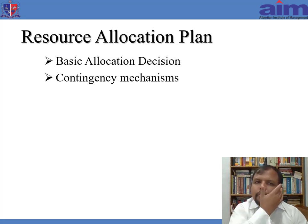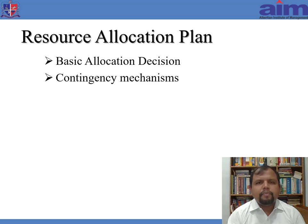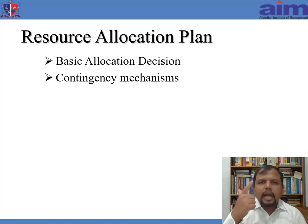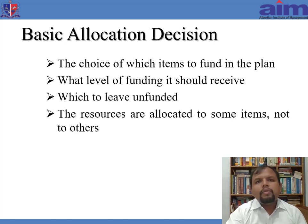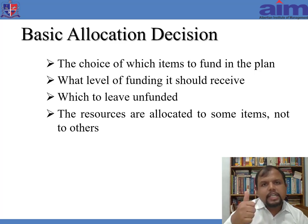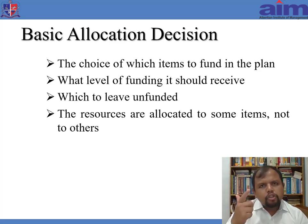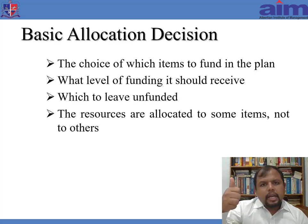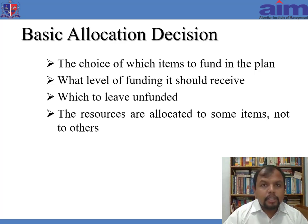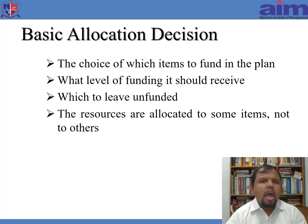When talking about resource allocation, there are two different mechanisms. The first is what we call basic allocation decisions and the second is contingency mechanisms. In basic allocation decisions, we choose which items or projects are to be funded, at what level of funding each project should proceed, and which projects should be left unfunded. For example, how many people need to be kept on a project, and how much funds to be given — that's what we call basic allocation decisions.